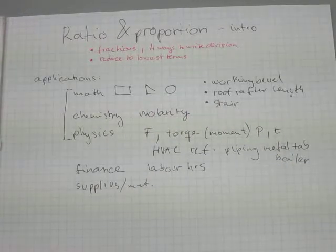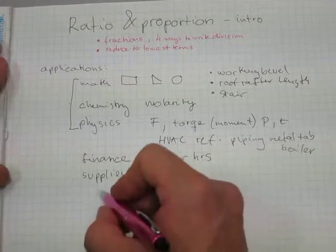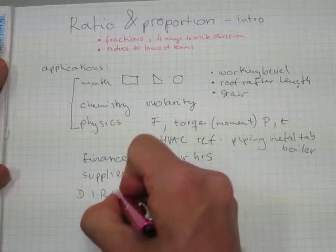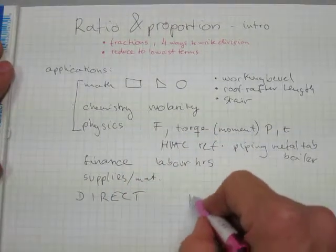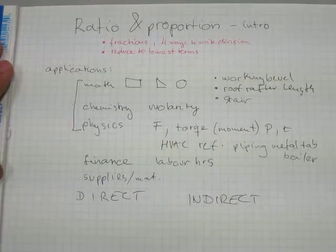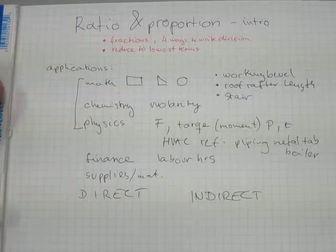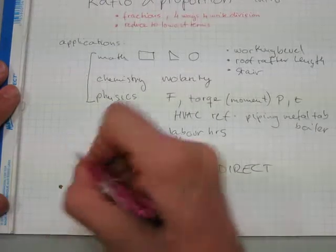Two kinds of ratio and proportion calculations exist. One of them is called direct ratio and proportion, and the other one is called indirect ratio and proportion. We will look at both.